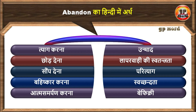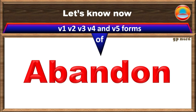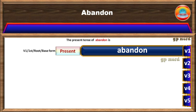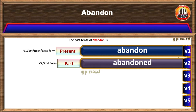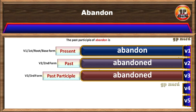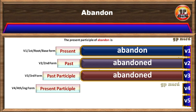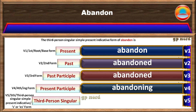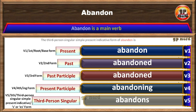Let's know all five forms of the verb abandon. The present tense is: abandon. The past tense is: abandoned. The past participle is: abandoned. The present participle is: abandoning. And the third person singular simple present indicative form is: abandons.